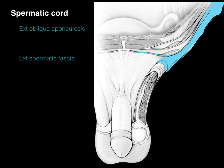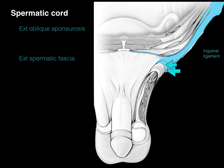In blue, you'll notice the external oblique muscle and aponeurosis, which becomes the external spermatic fascia — the outside layer surrounding the testis. The inguinal ligament is literally just the inferior border of the external oblique aponeurosis that attaches to the anterior superior iliac spine and courses down to the pubic bone.